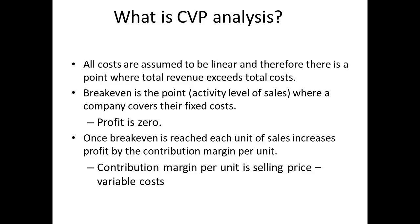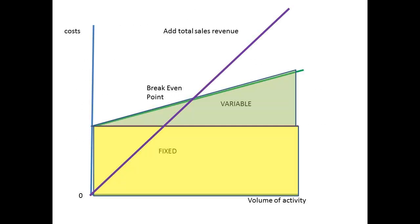Each unit of sale will increase the profit by a particular amount. This amount is referred to as the contribution margin per unit. The contribution margin per unit is the selling price less the variable costs. We now add the line to show total sales revenue. Notice that it intersects the line that represents the total costs. It is at the point that it intersects that is called the break-even point.